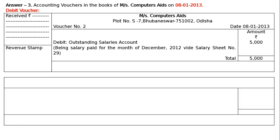And in the left side, just below, the next line will be the signature of manager — SD manager. And right side there will be SD accountant.